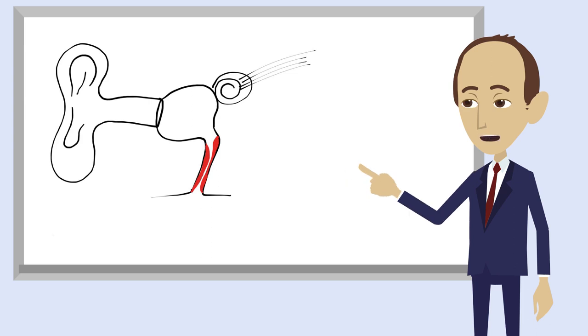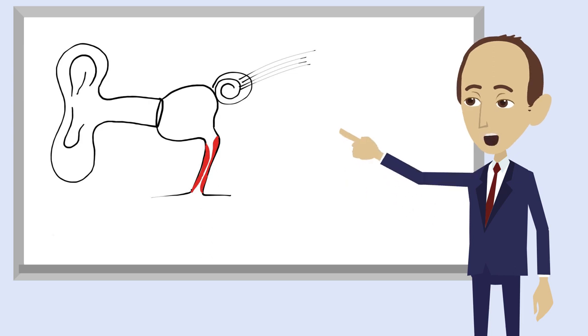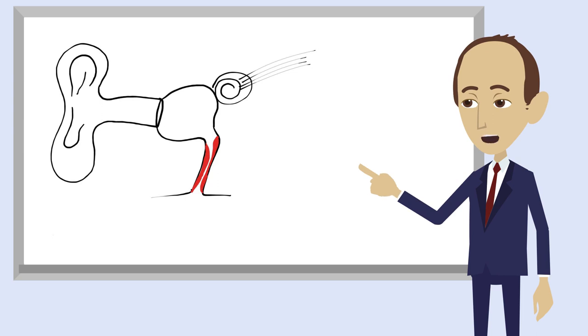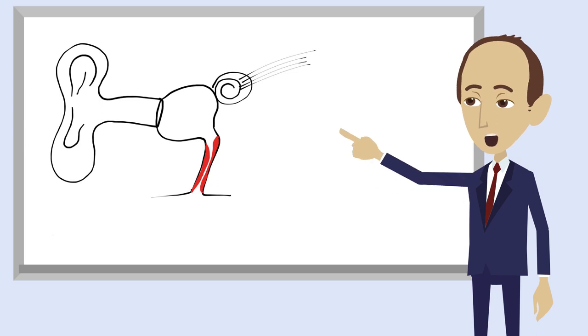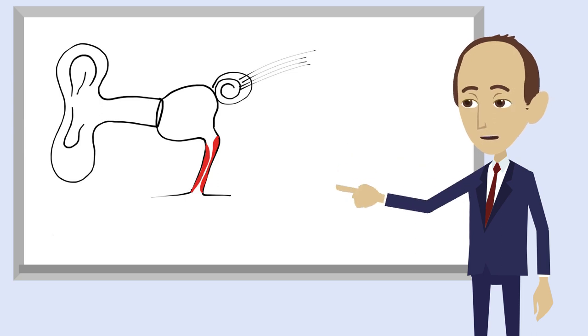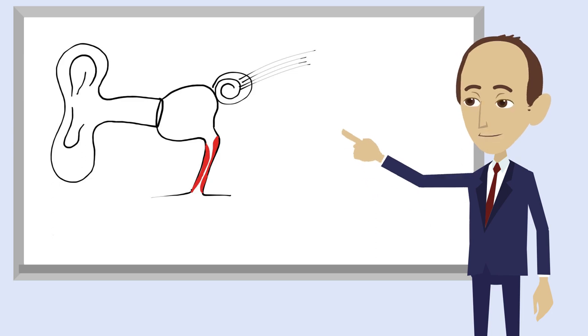This is the reason why children get eustachian tube dysfunction more often than adults. They are smaller than adults and correspondingly their eustachian tubes are also smaller and therefore more likely to get blocked. They are also developing their immune system and therefore get infections that cause this problem more often.